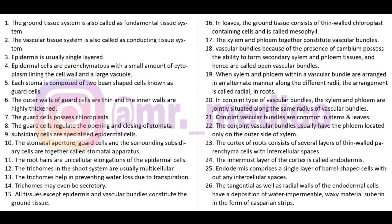Very important: all tissues except the epidermis and the vascular bundle constitute the ground tissue system. In the leaf, the ground tissue consists of thin-walled, chloroplast-containing cells called mesophyll.